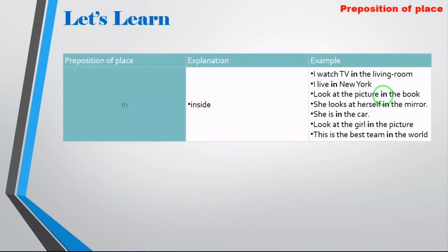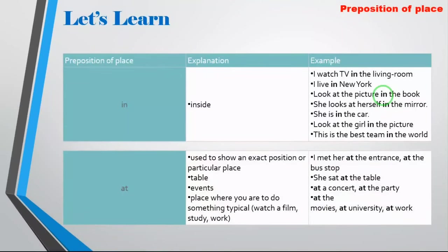Now let's move to 'at.' How am I going to use 'at'? You use 'at' to show an exact position or a particular place. For example: I met Celine at the entrance. I met Teacher Wilson at the bus stop. That is a particular place — at the entrance, exact position — at the bus stop. And when you are sitting at a table, you say: she sat at the table.